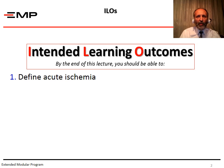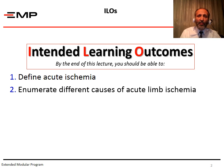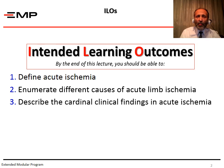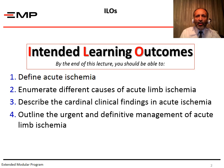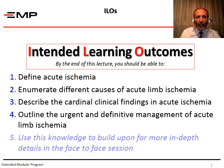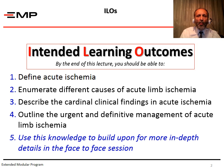By the end of this recorded lecture, you should be able to define acute ischemia, enumerate different causes of acute limb ischemia, describe the cardinal clinical findings in acute ischemia, and outline the urgent and definitive management of acute limb ischemia. You will be able to use this knowledge to build upon for more in-depth details in the face-to-face session.